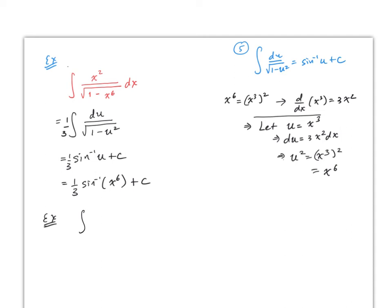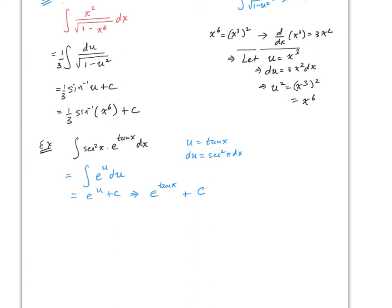Let's go to integral one or two. Say you have the integral of sec²(x)·e^(tan x) dx. It should be obvious that u = tan(x), because then du = sec²(x) dx, which is right here. So this becomes the integral of e^u du, and the du contains both parts. Therefore this equals e^u + c = e^(tan x) + c.